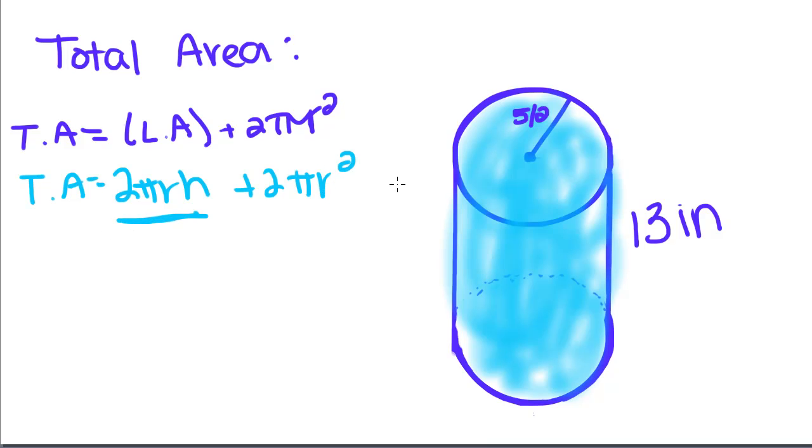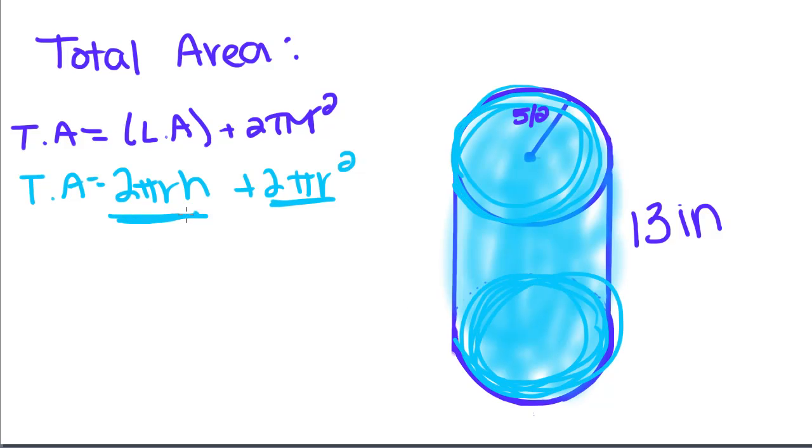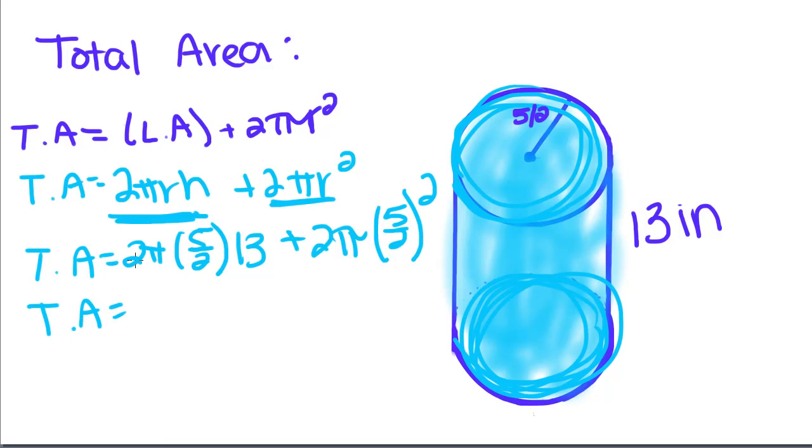This part gives us the lateral area, and when we add them together, we get total area. So we have 2π times r, which is 5/2, times 13, plus 2πr². So 2 times 5/2 just leaves us with 5, because the 2's cancel. So we have 5 times 13 times π